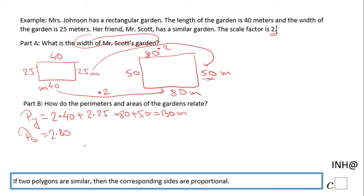Plus 2 times 50, that will be 160 plus 100, which will be 260 meters. So now, in order to find how these two perimeters relate, let's take a look at the perimeter of Mr. Scott's garden.